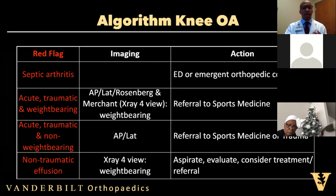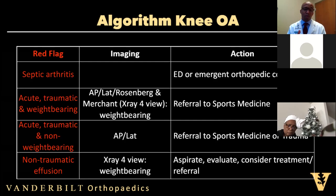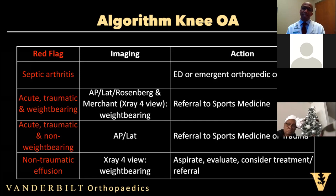If there is acute pain that has occurred with trauma but the patient is weight bearing, that's when it may be a meniscus issue, or it might be an ACL or an MCL. A four-view weight-bearing x-ray series is still important here, and if you are seeing that across your office, it's appropriate to do a referral to sports medicine. If there's acute pain, it's been traumatic, but the patient is not weight bearing, this may be a more severe injury — fractures are really what we're concerned about here. So here we order an AP and a lateral, and refer to either sports medicine or the trauma offices. By calling the Vanderbilt Orthopedics main line, our call staff will help discern if it's an issue that needs to be seen by sports medicine or trauma.